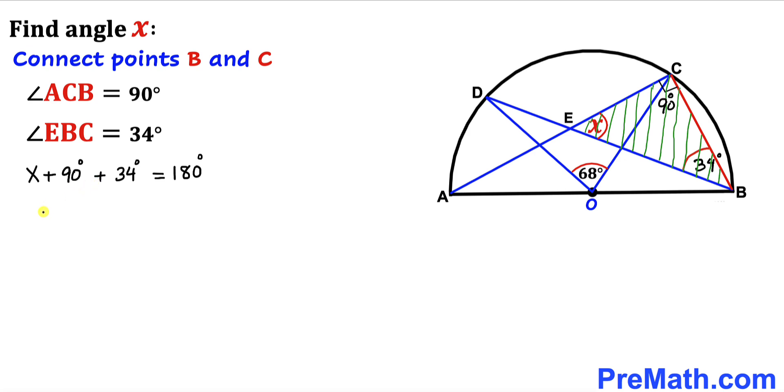Let's combine the like terms on the left hand side: X plus 124 degrees. Subtract 124 degrees from both sides. Therefore our angle X turns out to be 56 degrees.